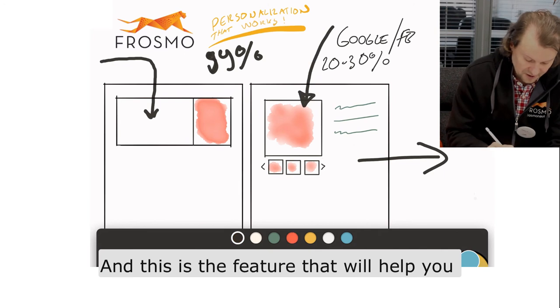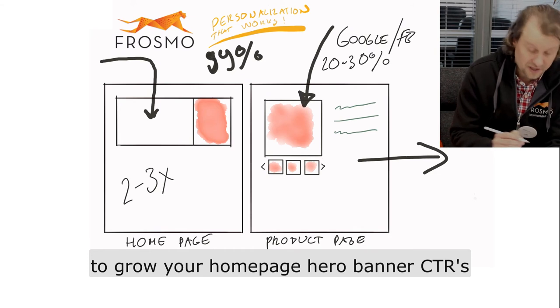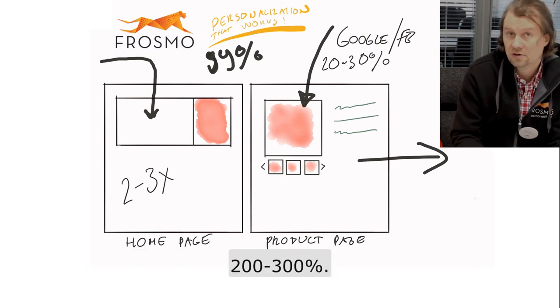This is the feature that will help you grow your homepage hero banner CTRs 200 to 300%.